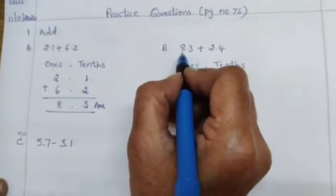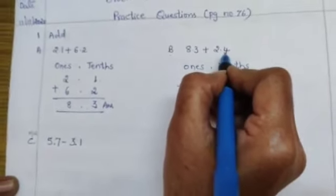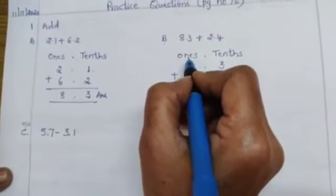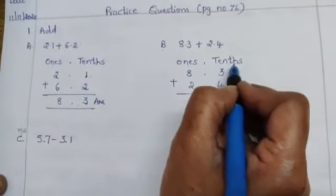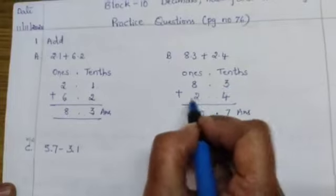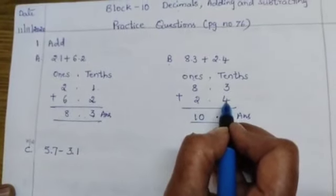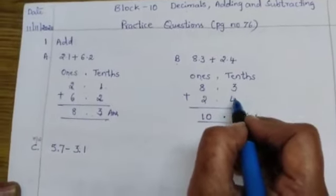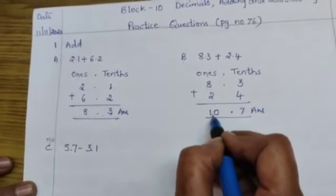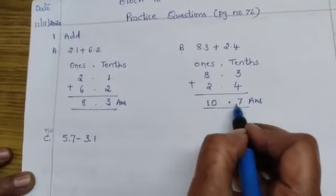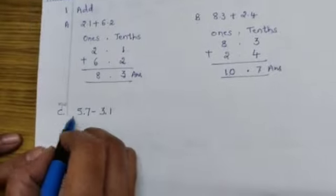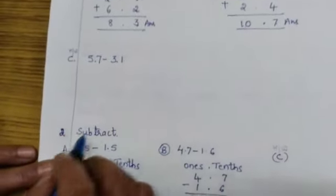B bit, 8.3 plus 2.4. Write again children, once, point, tenths. 8.3, 2.4. 3 plus 4 is 7, 8 plus 2 is 10. So answer is 10.7. C bit, do it as homework.